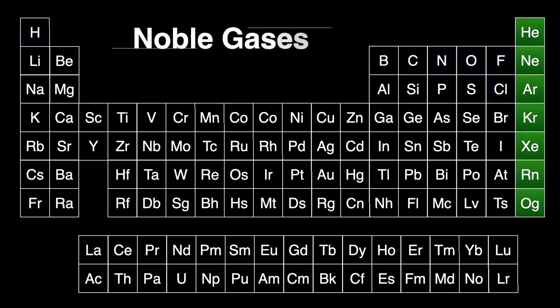Speaking of which, that right-hand column of the periodic table hosts what we call the noble or inert gases. These are the standoffish elements that really don't want to participate in chemical reactions. Why?